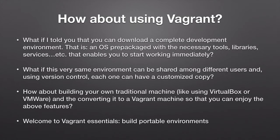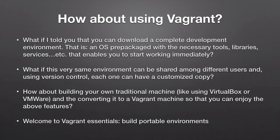So how about using Vagrant? What if you could download a complete development environment — an OS prepackaged with the necessary tools, libraries, and services — that enables you to start working right off the bat? One copy of this very same environment can be shared among different users, and using version control systems like Git, each one can have a customized copy. You can even build your own traditional machine using VirtualBox or VMware and convert it into a Vagrant machine to enjoy all these features.